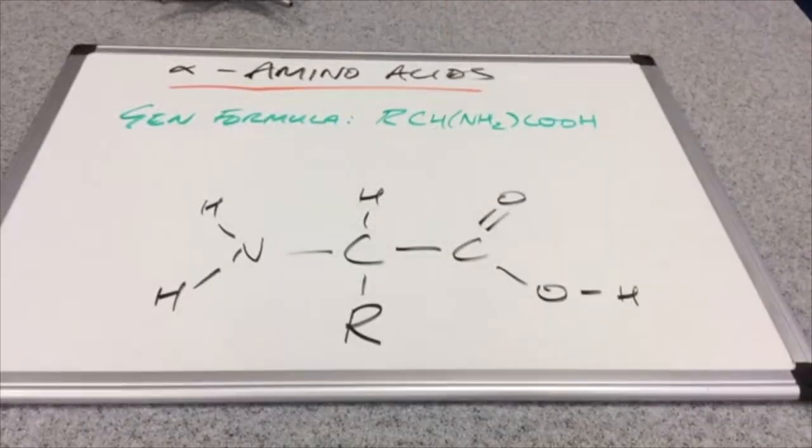And you can see there, I've written up in green, the general formula of an alpha amino acid: RCHNH2COOH.